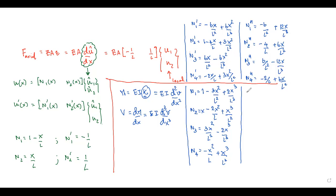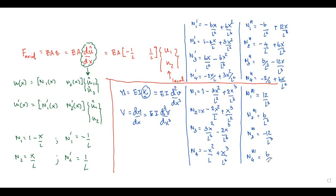The third derivatives are: N1''' = 12/L³; N2''' = 6/L²; N3''' = -12/L³ (which gives -6/L²); N4''' = 6/L². These constant third derivatives are used to compute shear force.